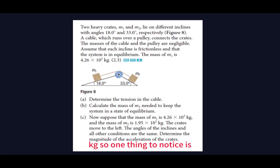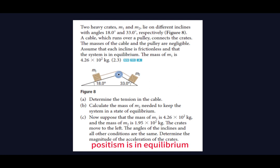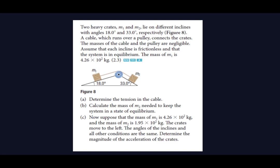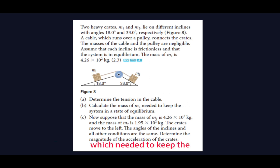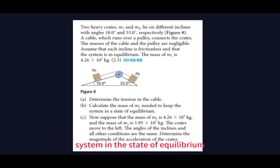One thing to notice is that because the system is in equilibrium, the net force on both sides should be zero. Question A asks to determine the tension in the cable, while B asks to calculate the mass of the second crate needed to keep the system in equilibrium.